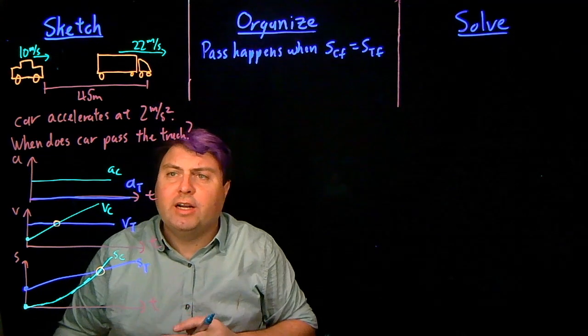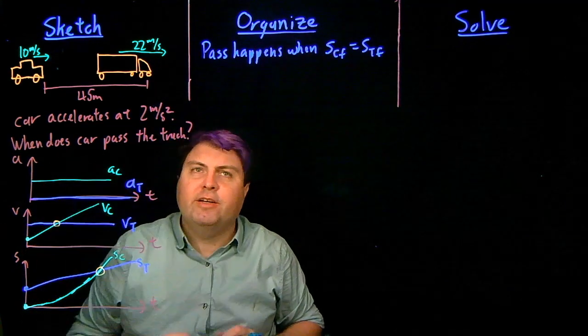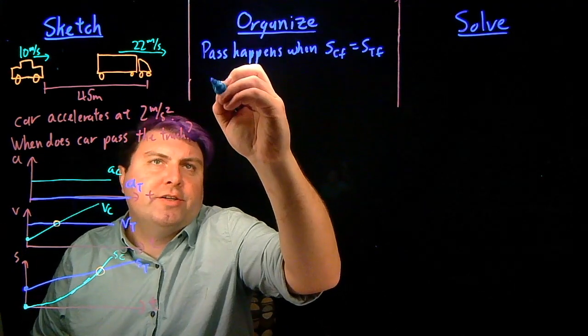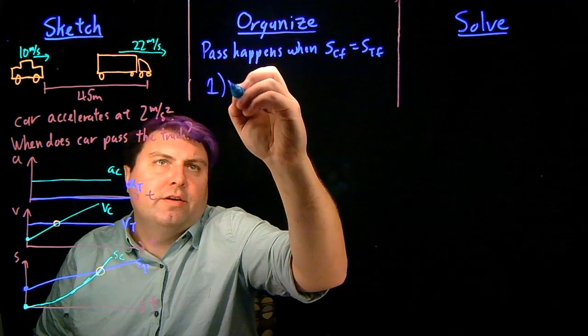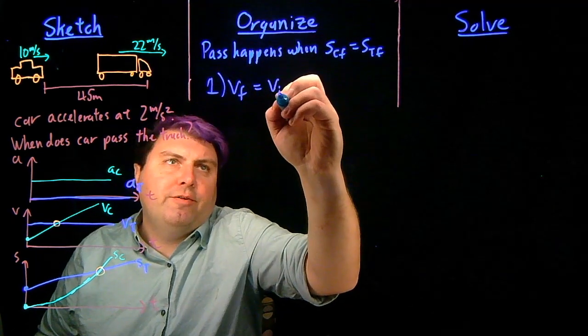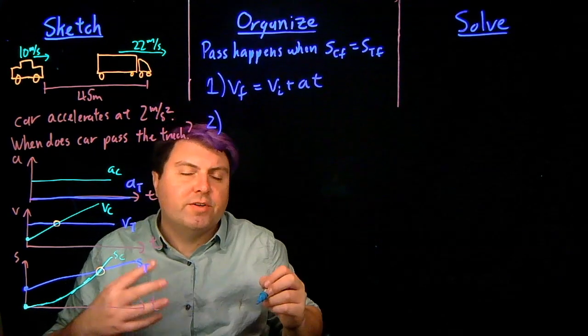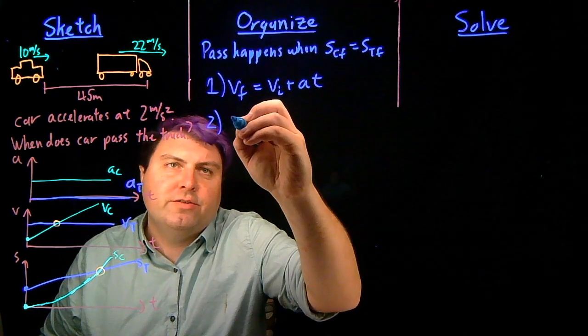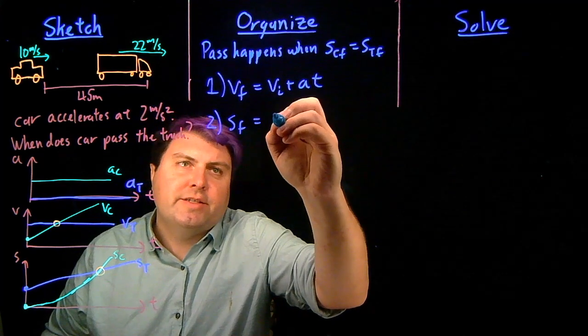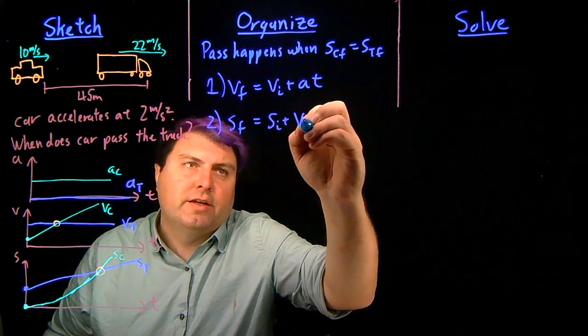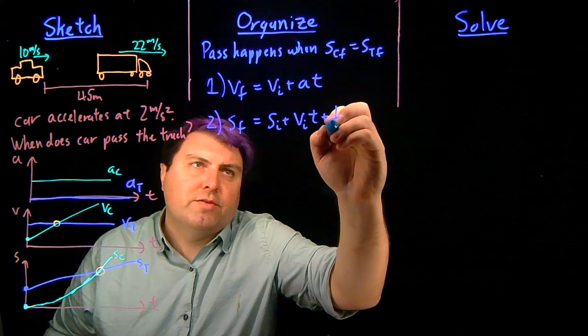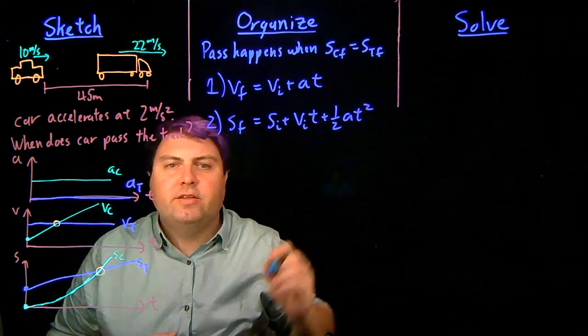Other things that might help us for organized is this is constant acceleration. So we can write the constant acceleration equations. Equation one, VF equals VI plus AT. And since we are in one dimension, we don't have to worry about vectors. And equation two, SF equals SI plus VIT plus one-half AT squared.